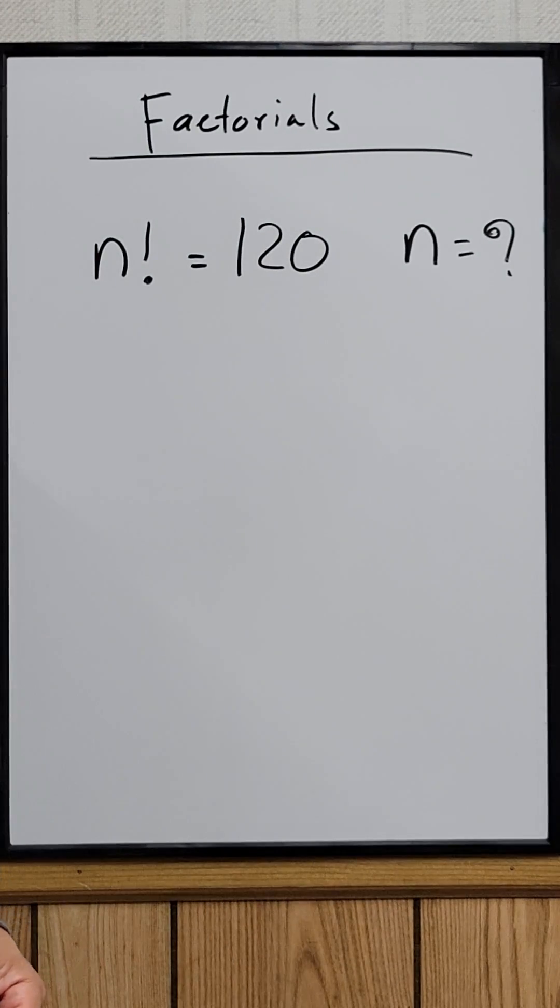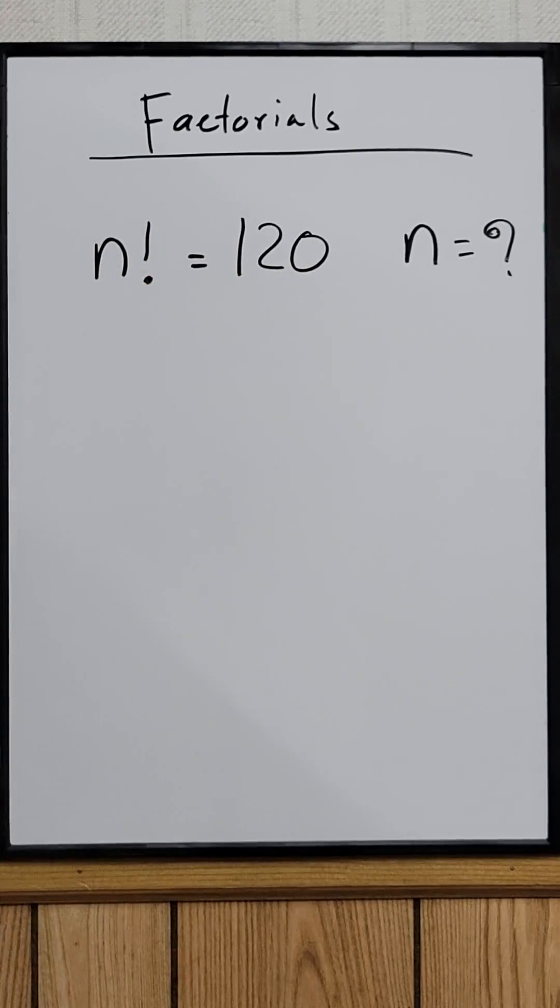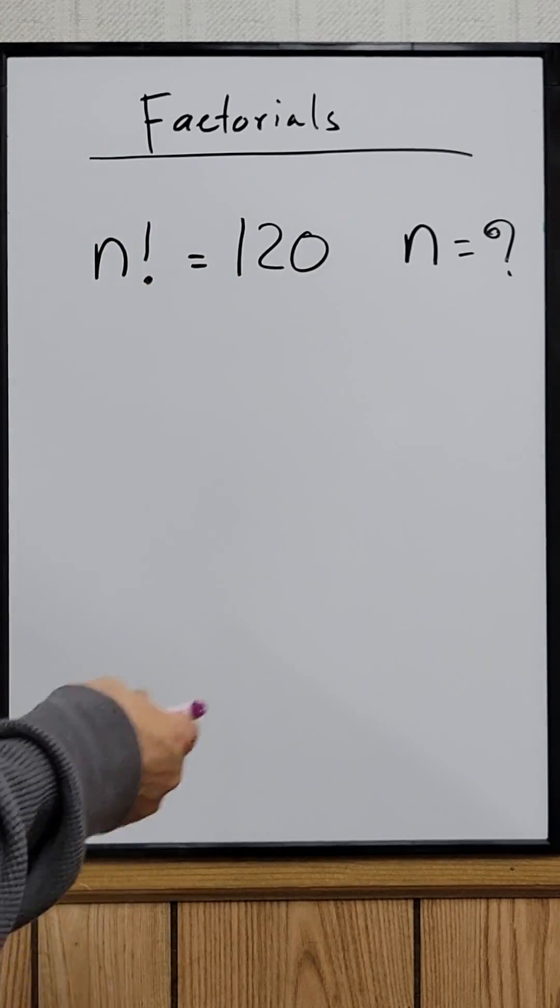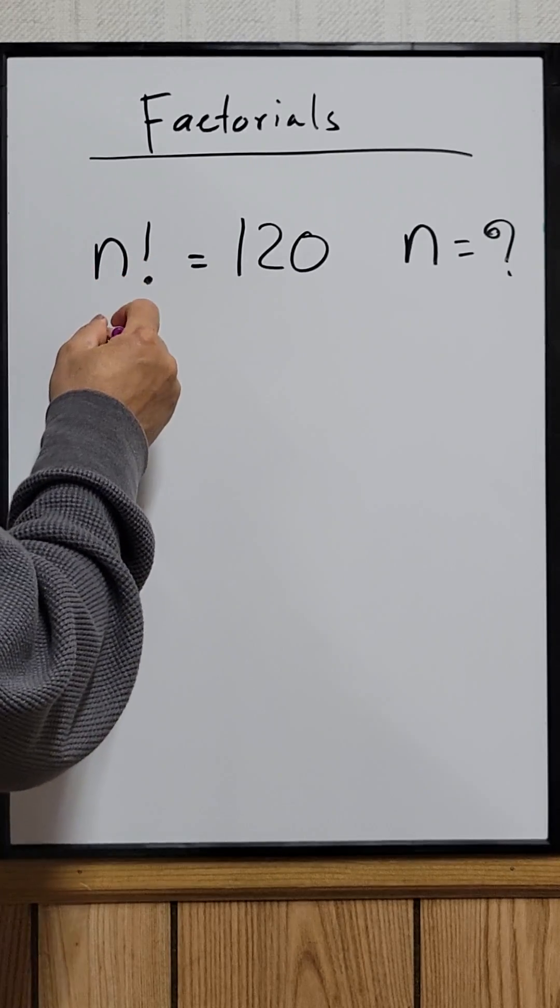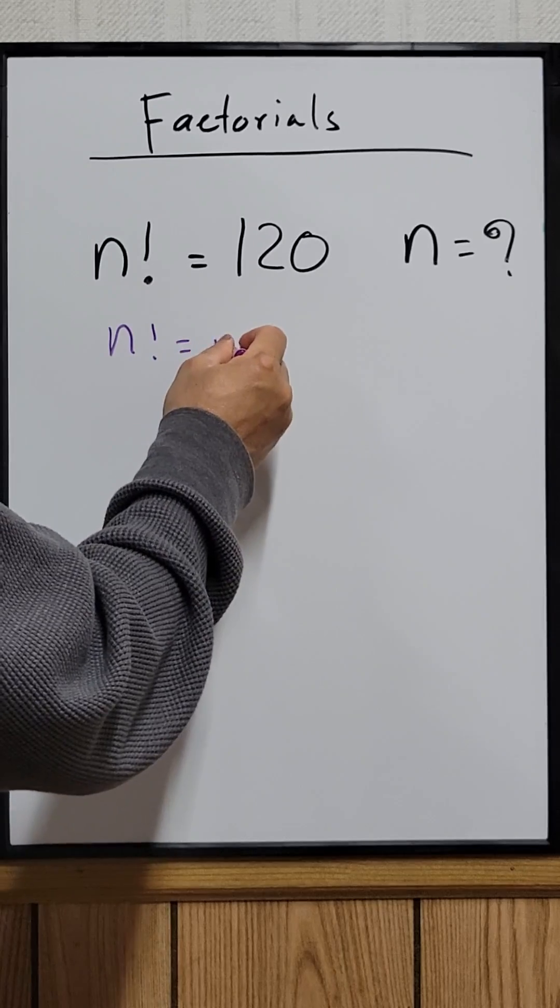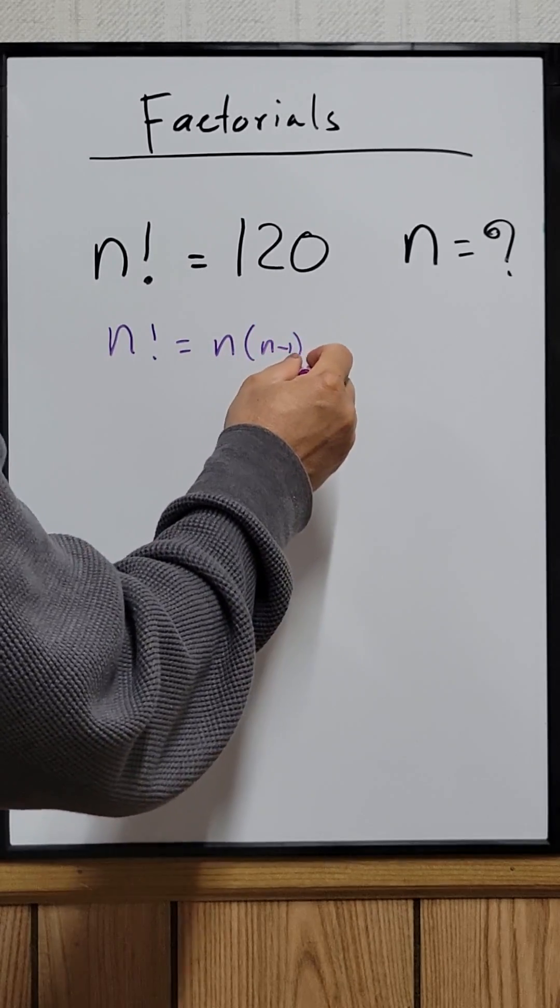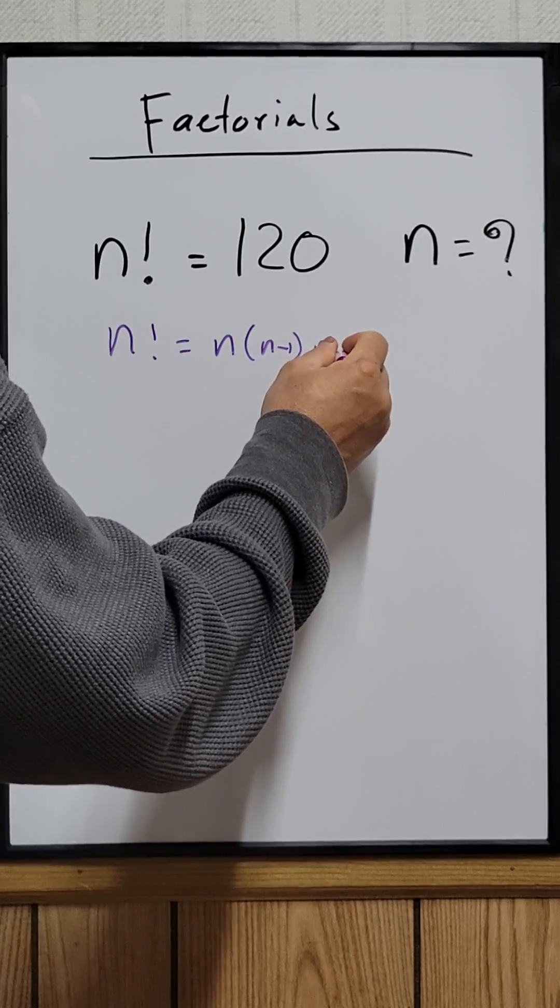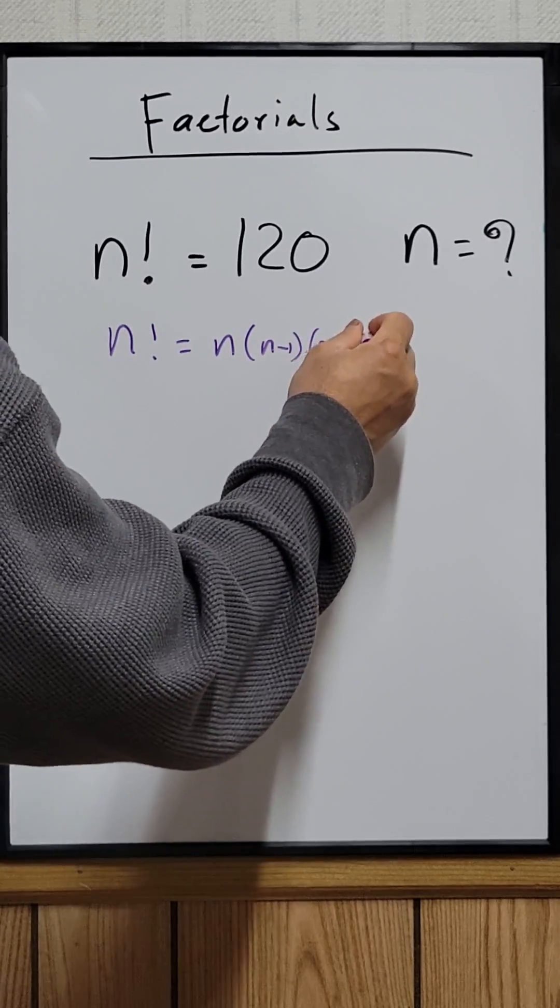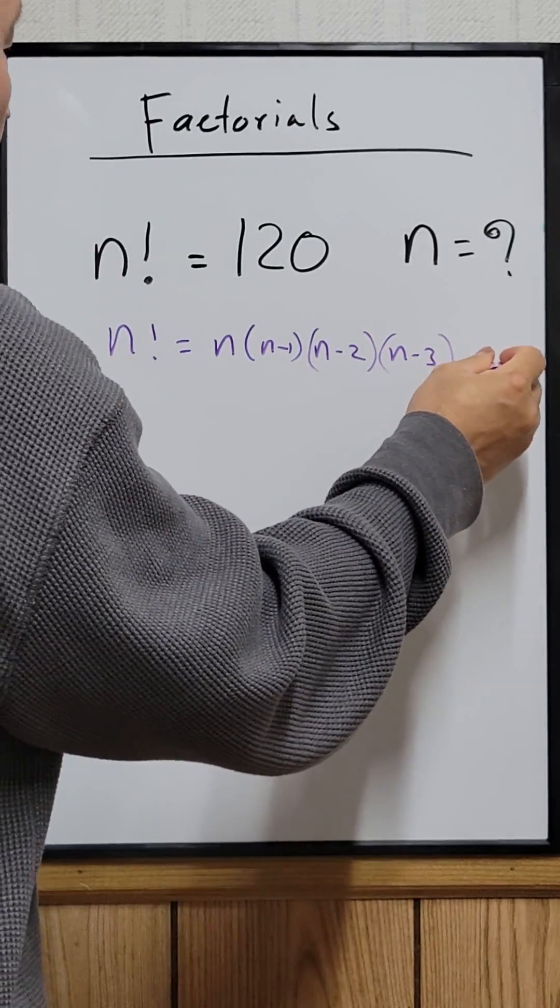Let's try to solve this problem: n factorial equals 120, what is n equal to? So you know that n factorial, which means that n times n minus 1 times n minus 2 times n minus 3 and so on.